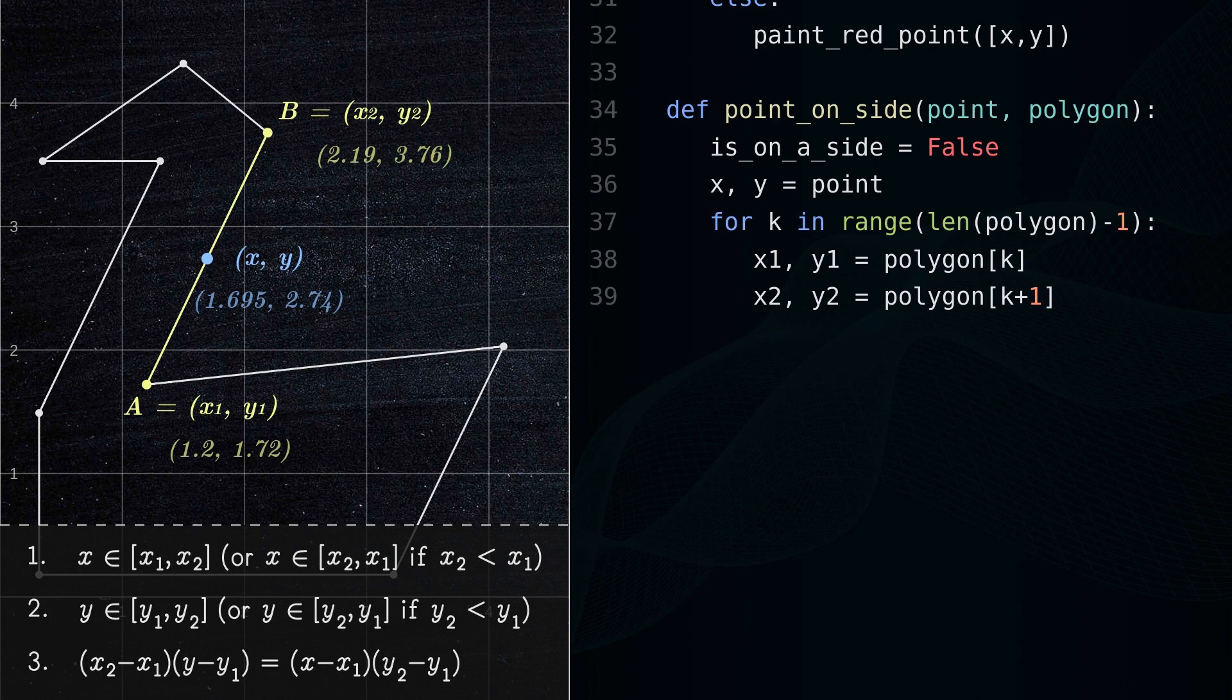First, the x coordinate of the point is between the x coordinates of the endpoints of the line segment.